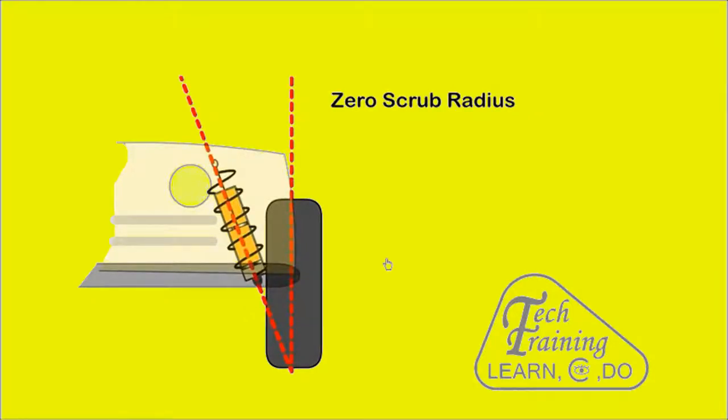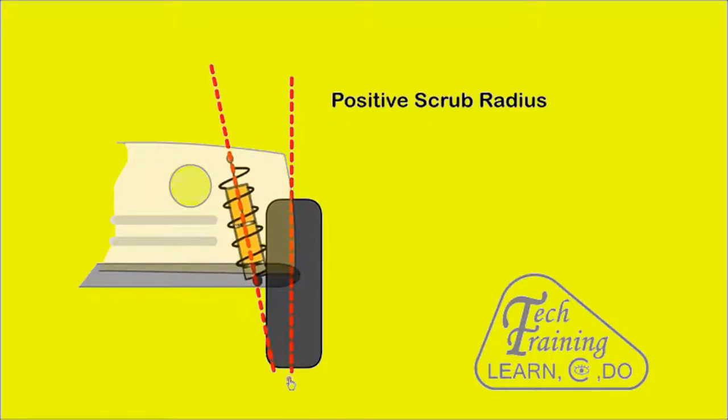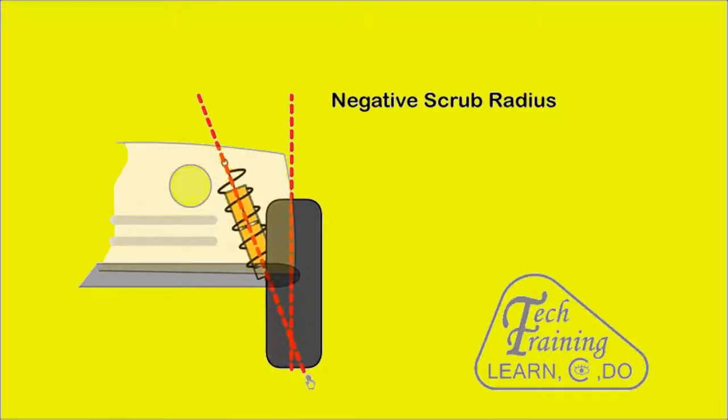Scrub axis is the distance between the steering axis road contact point and the centre of the wheel. When both meet at the same axis, it is called zero scrub. When the steering axis point is towards the inside of the wheel, it is called positive scrub radius. The braking force on this wheel will tend to turn it outwards. When the steering axis point is towards the outside of the wheel, it is called negative scrub radius. The braking force on this wheel will tend to turn it in.